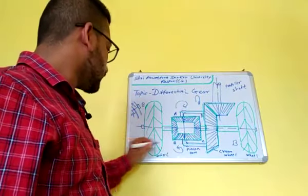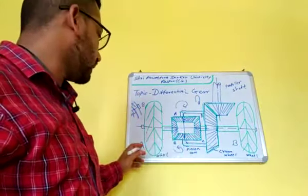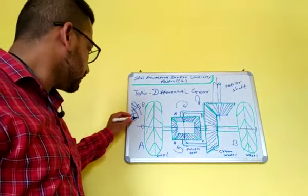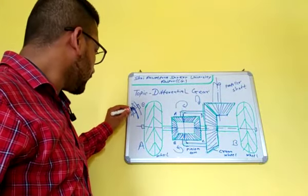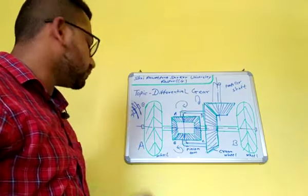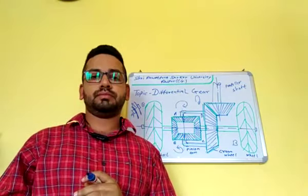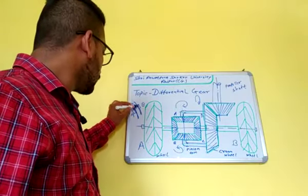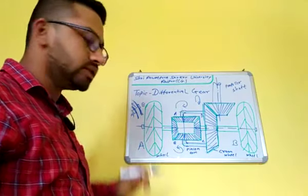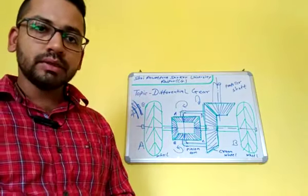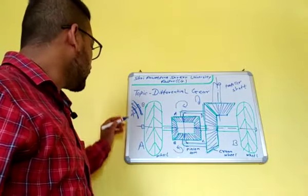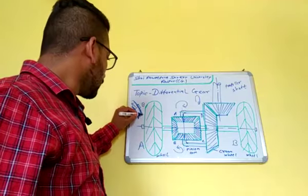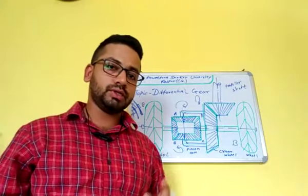A and B are the two wheels. If we take a turn, A will rotate less and B will rotate less on the inner side. The outer wheel will rotate more during the turn.